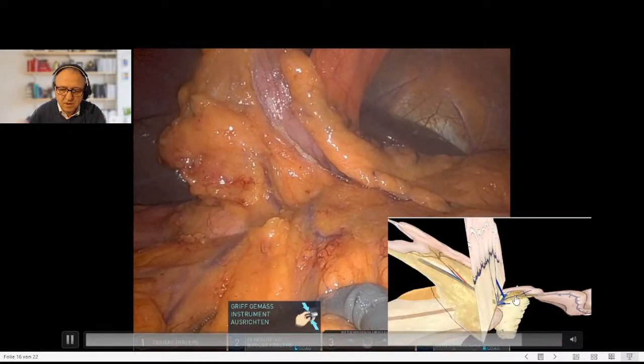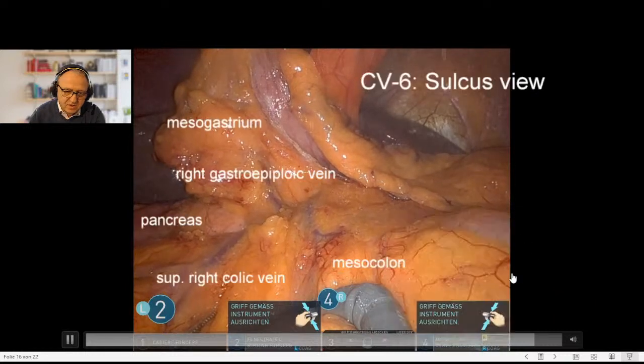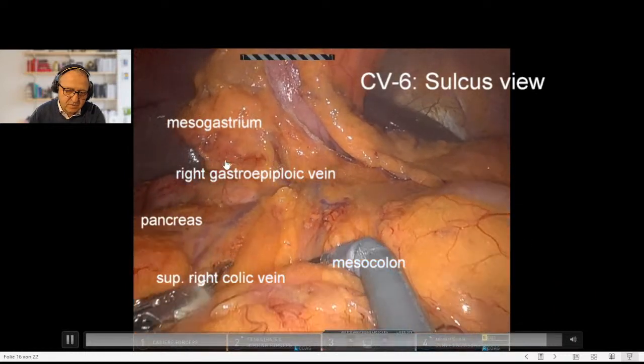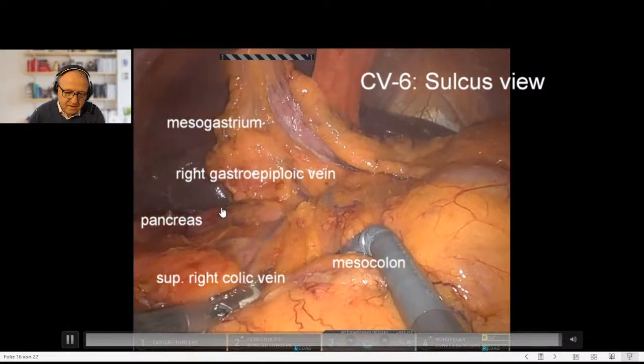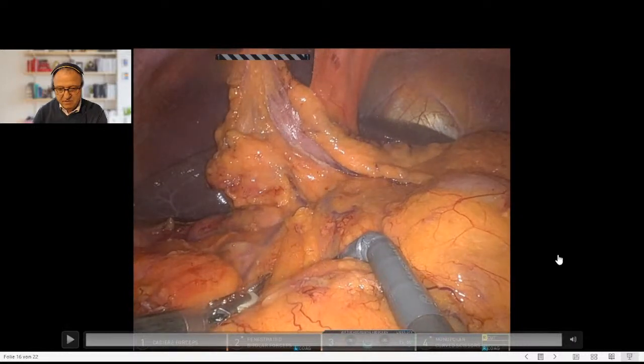These are the last adhesions to the duodenum. And this is the sulcus view as you would see it here: mesogastrium, the gastroepiploics, pancreatic head, and the colic vessels.